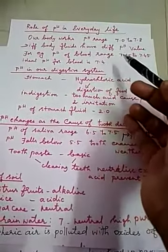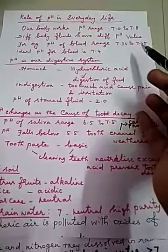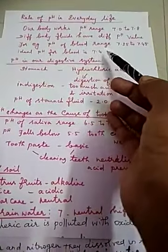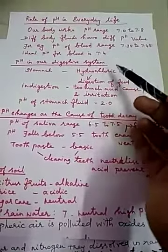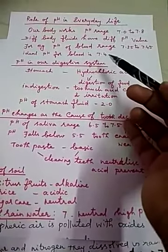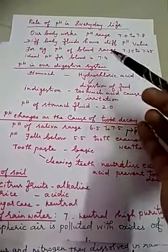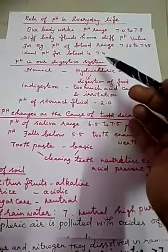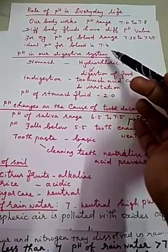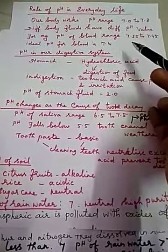The pH of blood ranges from 7.35 to 7.45. The ideal pH for blood is 7.4. Any increase or decrease in this value — for example, to 7.8 or 6.5 — leads to diseases in our body.